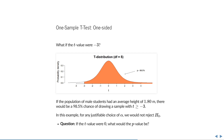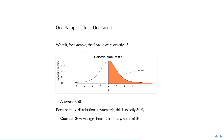Quick question: if the t-value were 0, what would the p-value be? You can pause the video if you want. The answer is 50%, because the t-distribution is symmetric. What it really means is: if the null hypothesis were true, what is the chance of observing a positive t-value? And in a symmetric distribution, the chance of a positive result is as large as the chance of a negative result.